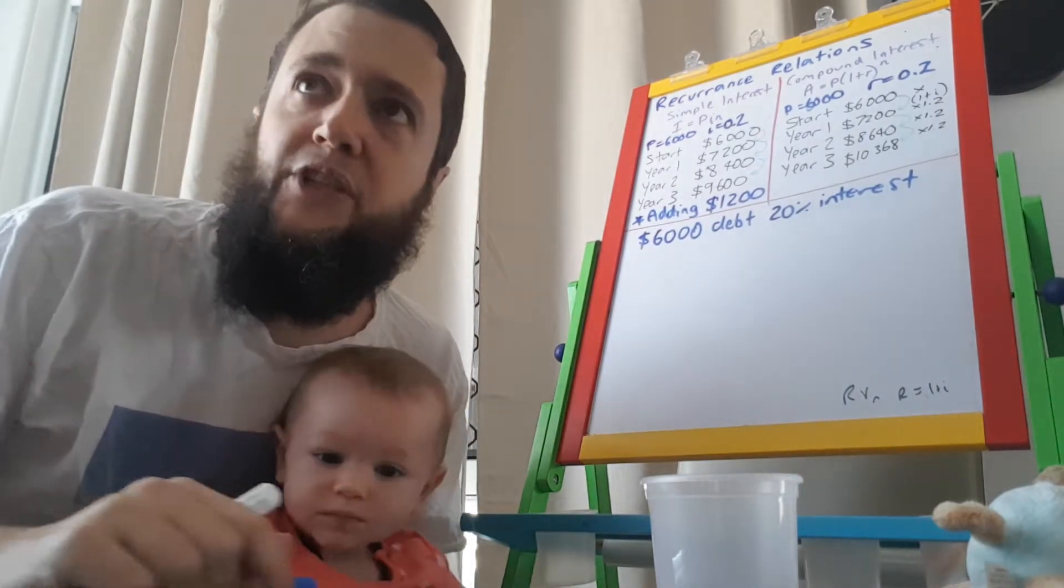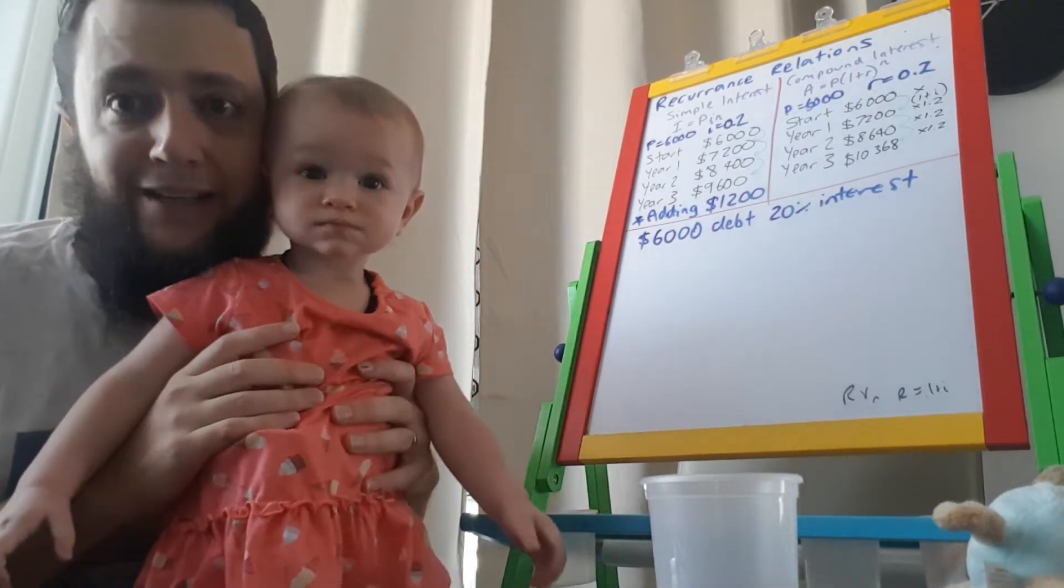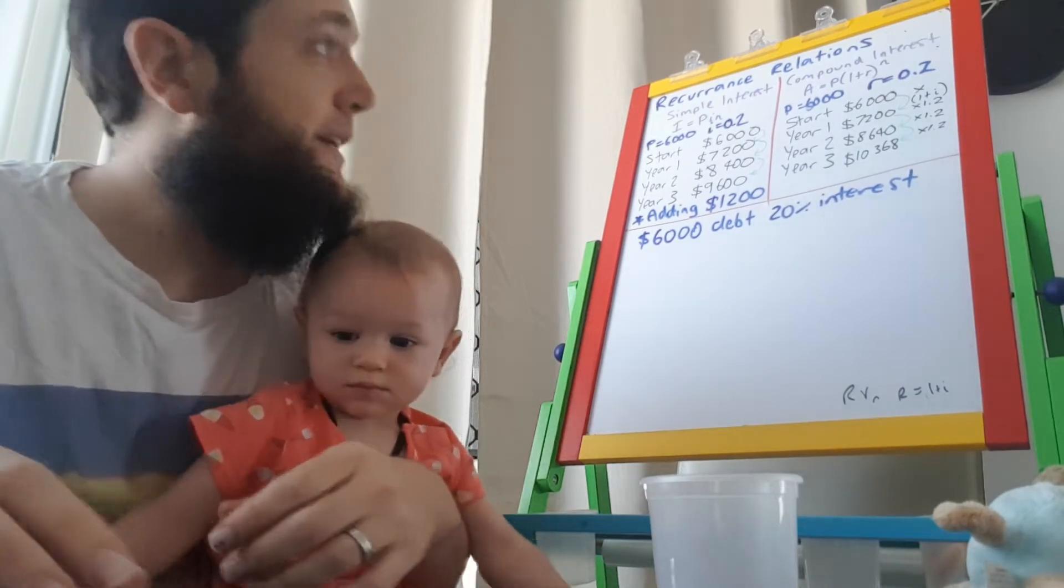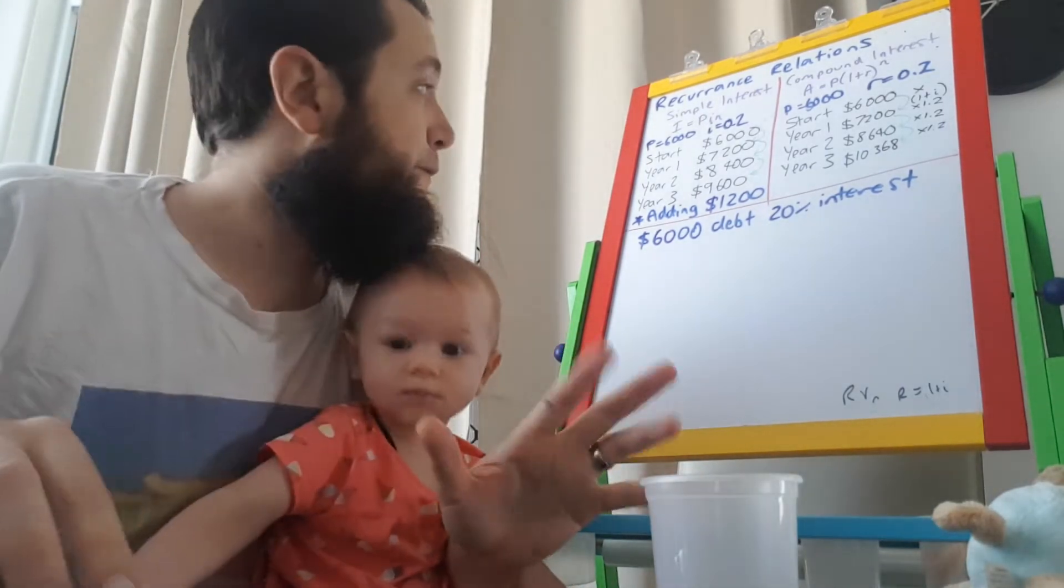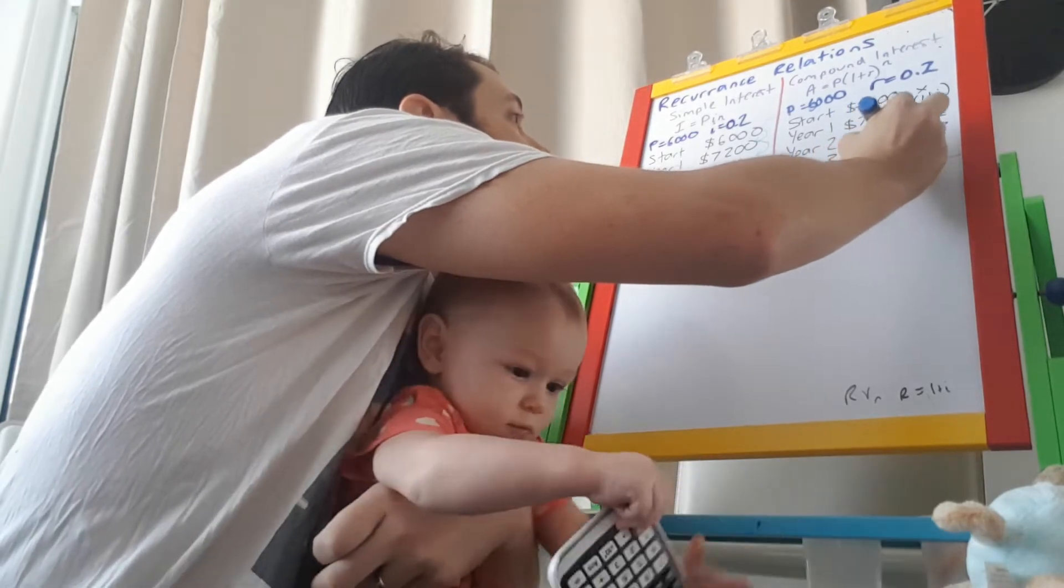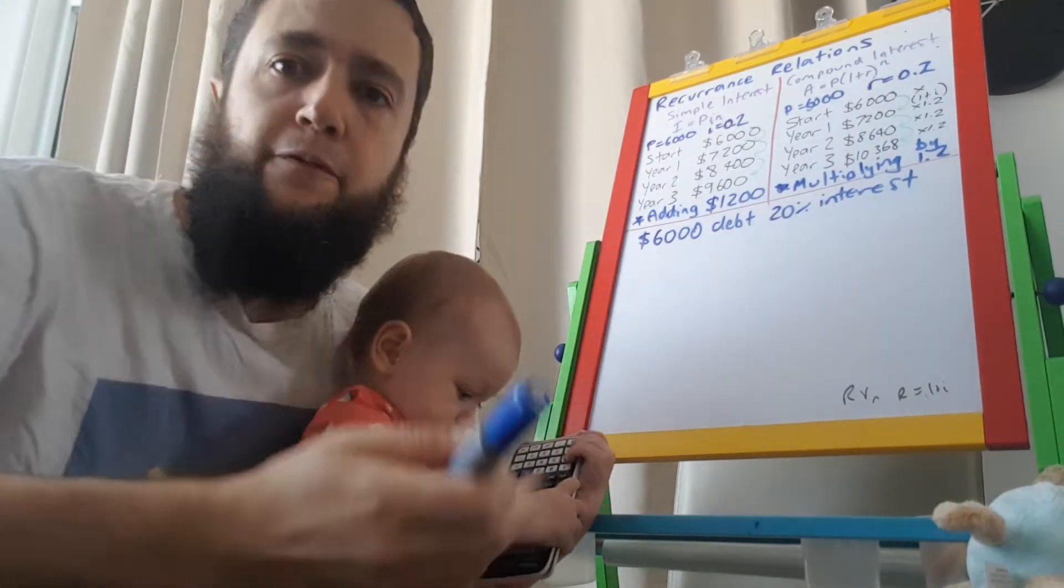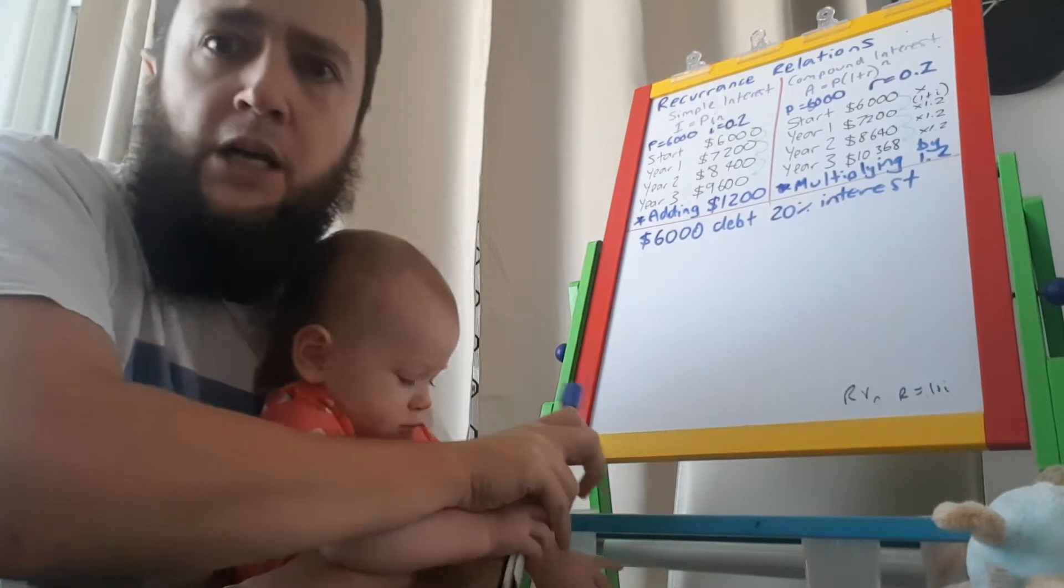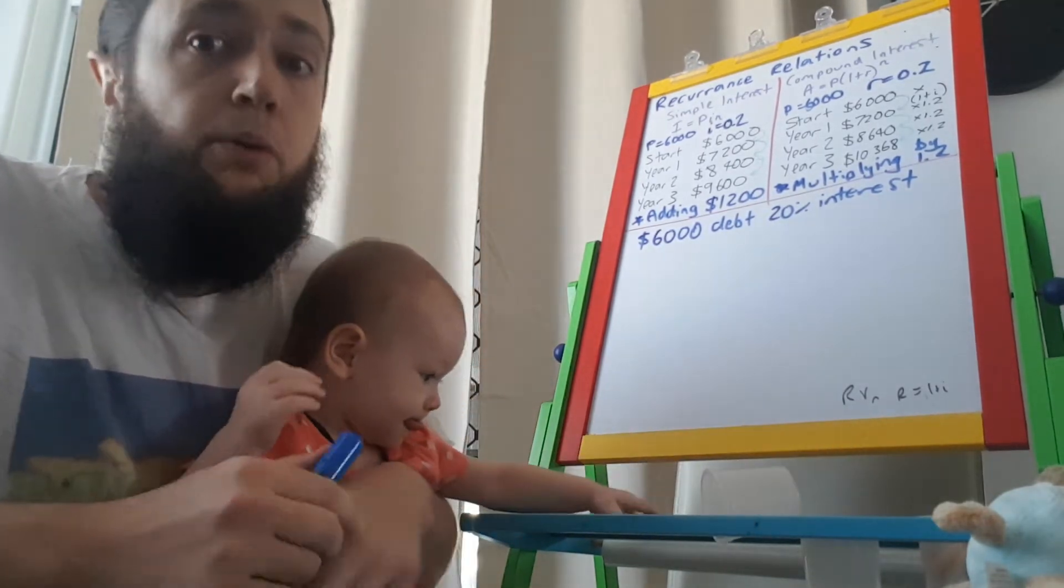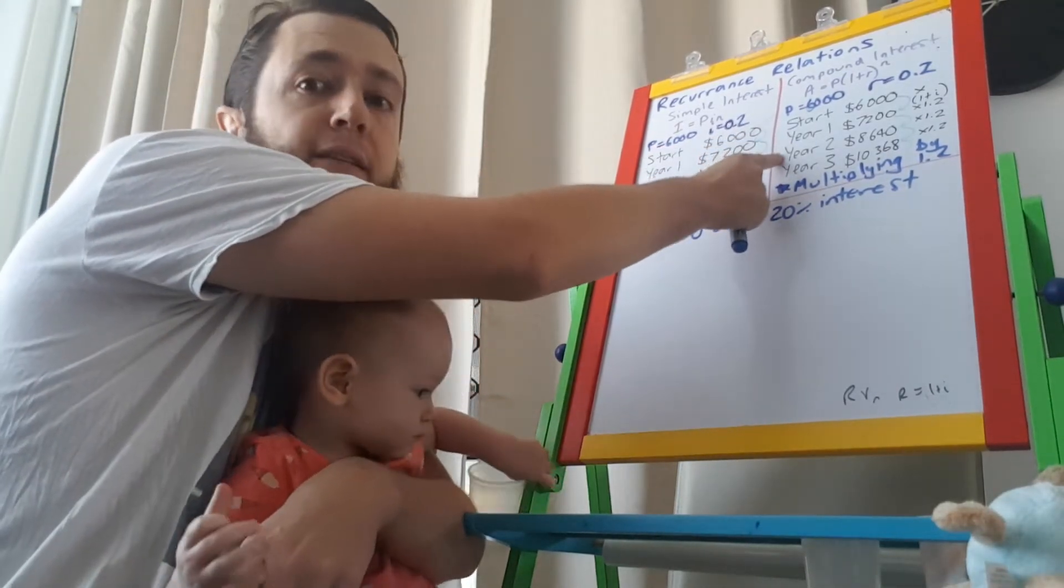So if you had the value of your debt to the mafia for one year, all you have to do is multiply it by 1.2, and you'd find your debt to the mafia for the next year. Which is very useful if you've got a large debt to the mafia, right? Now, you can see from this that you can work out your debt from one year to another. In the simple interest case, you can work out your debt from one year to another simply by adding 1,200. On the other hand, in compound interest, you can work out your debt from one year to another by multiplying by 1.2.